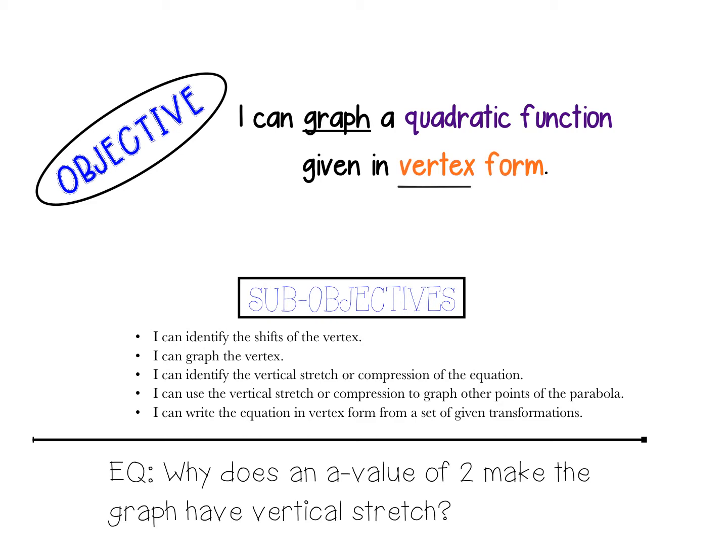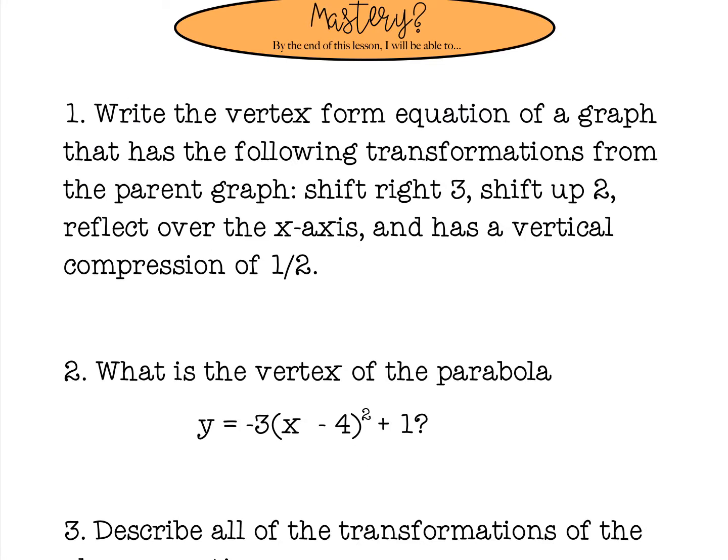I can graph the vertex — once I identify that point, I can put it on the graph, just like graphing from standard form. I can identify the vertical stretch or compression — that A value — is it getting taller and skinnier, or fatter and shorter? Then I can use the vertical stretch or compression to graph other points using the parent table. And also, if I'm given a set of transformations, can I write the equation in vertex form? Given an equation in vertex form, can I identify the vertex and all the transformations that have occurred?